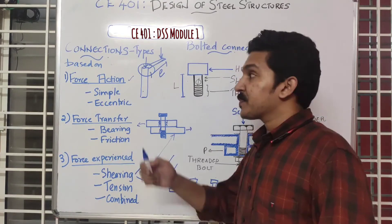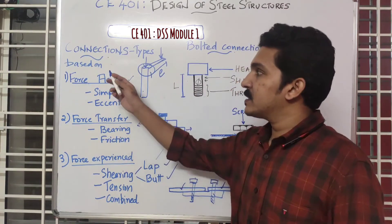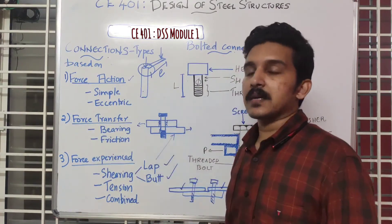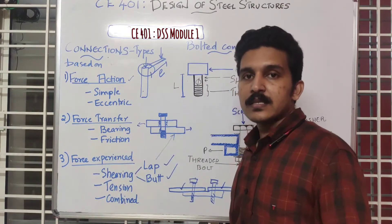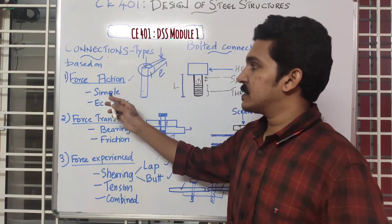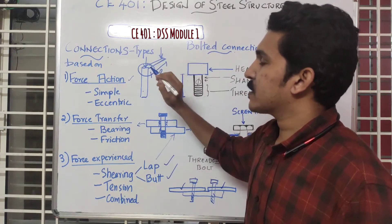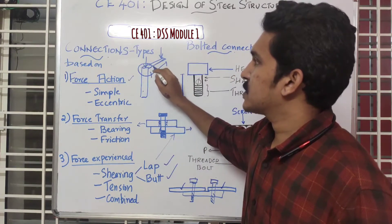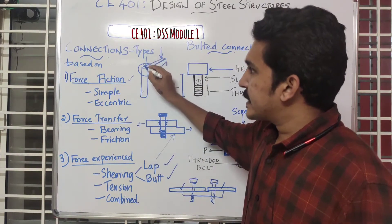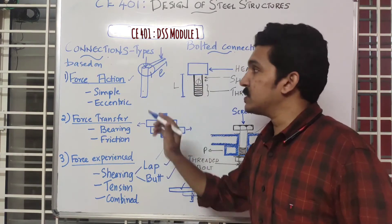The last topic for today is the types of connections. Connections can be of various types based on the force acting on the connection, force transferred by the connection, and force experienced by the connection. Based on force action, there are two types: simple and eccentric. In a simple connection, the load acts directly on the connection, such as a beam-column connection.